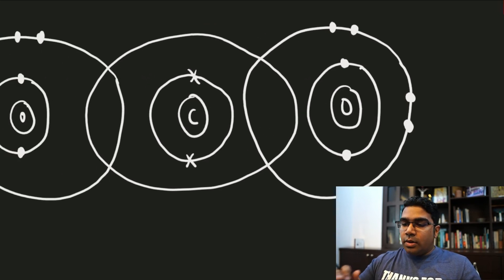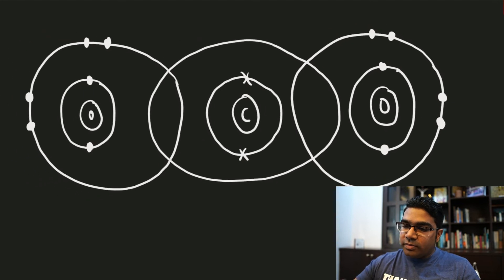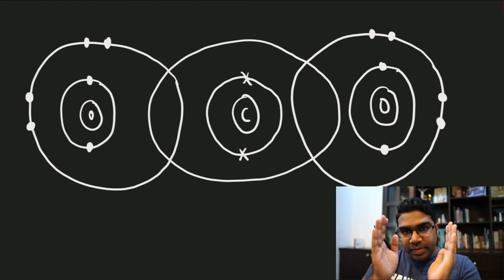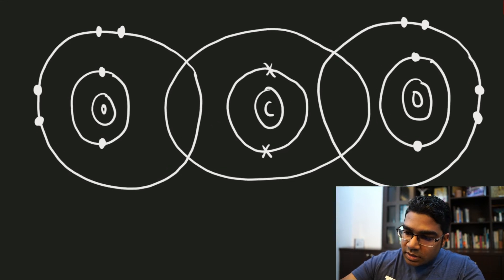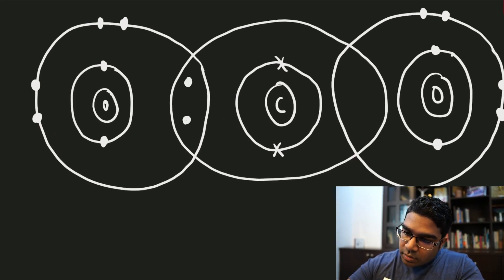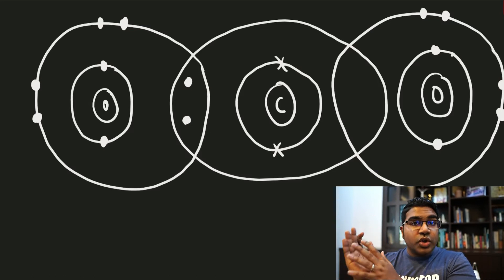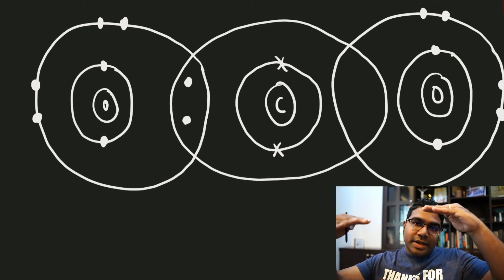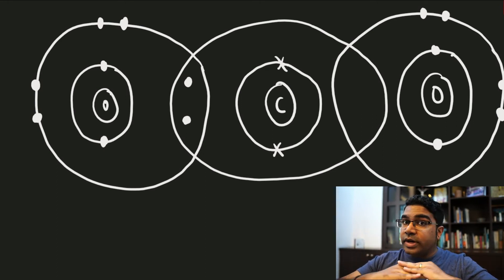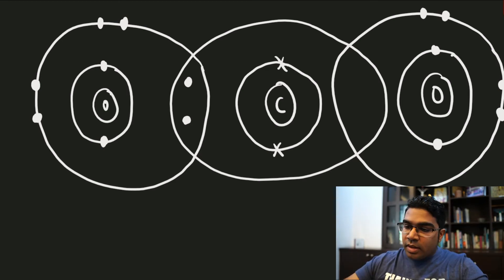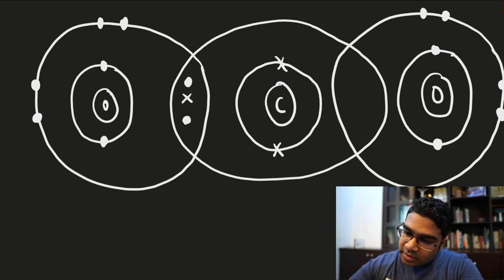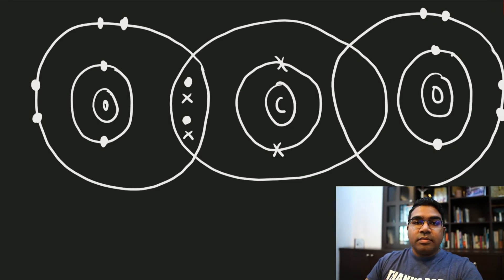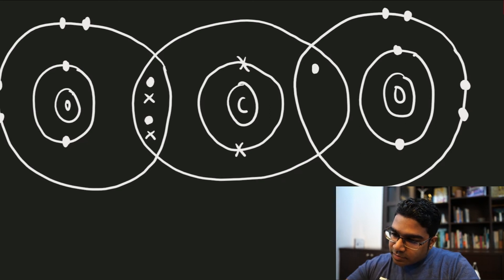Now, all the contributed electrons are going to be involved in bonding, which means we draw them in the overlapping space between the shells. Oxygen contributes 2 electrons, and when oxygen contributes 2, carbon also has to contribute 2 back — this is how covalent bonding works. One electron is contributed from one atom, and the other atom matches it with one. So there is 1 from carbon to match the first, and another 1 to match the second. The same goes on the other side as well — this is how you draw the bonding pairs.